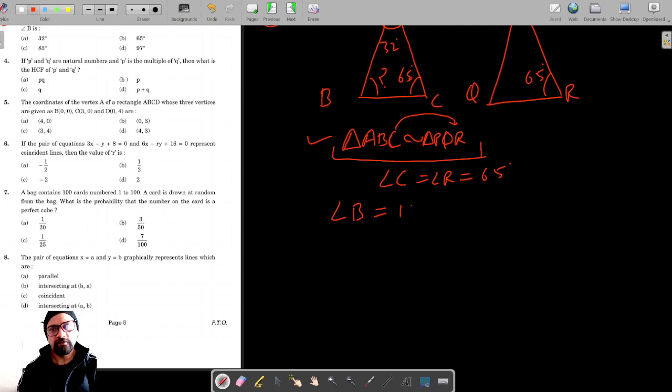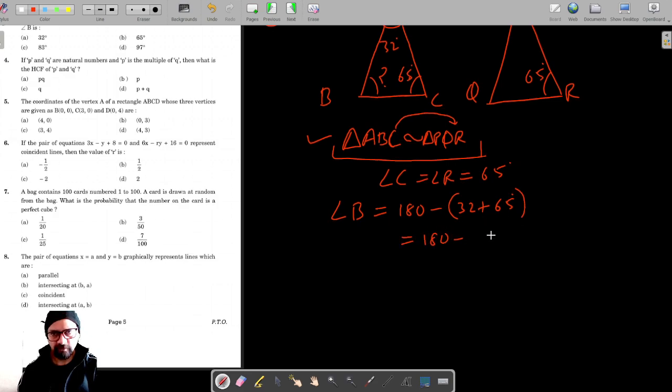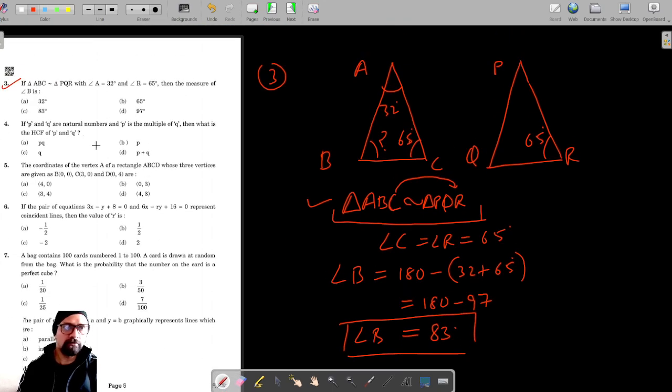Angle B equals 180 minus 32 plus 65, which equals 180 minus 97. 10 minus 7 is 3, 17 minus 9 is 8. So angle B equals 83 degrees, and C is the correct option.